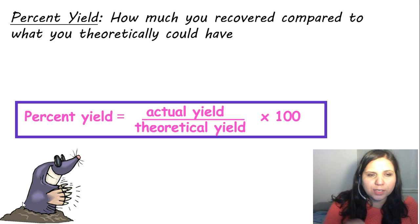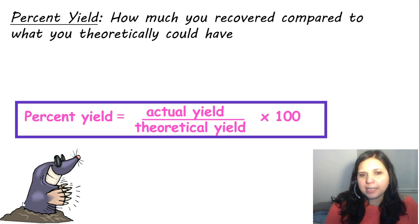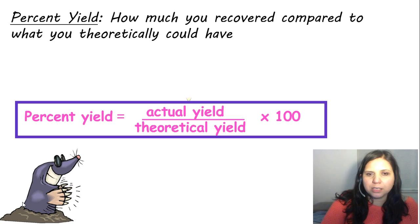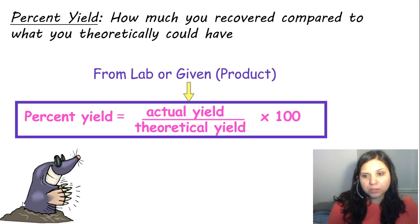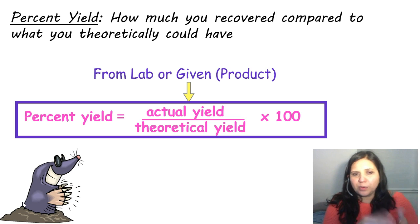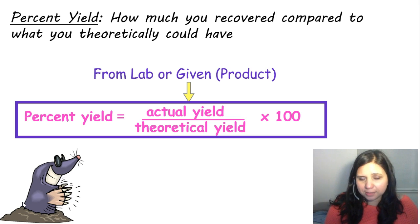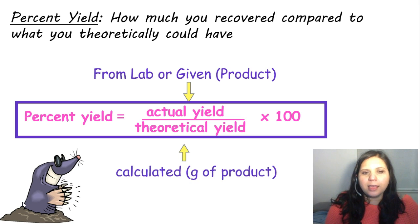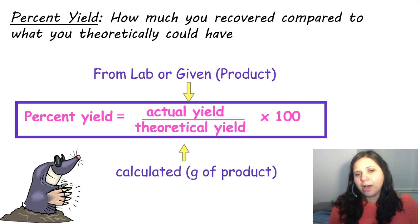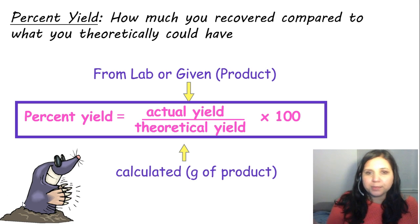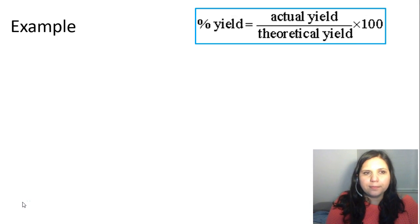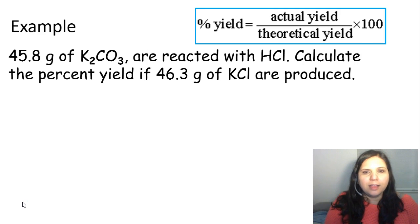Here's our equation: percent yield equals actual yield divided by theoretical yield, times 100. The actual yield comes from the lab, or it's given to you in the problem — it's always a product. The theoretical yield is calculated by taking a reactant and calculating how much product you would have, using stoichiometry. You always want to take it to grams of whatever product.